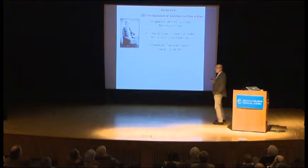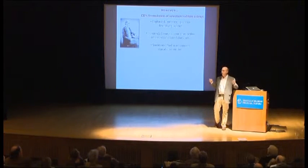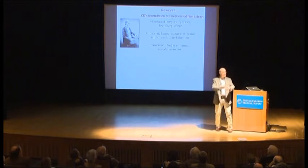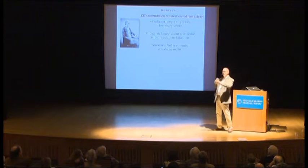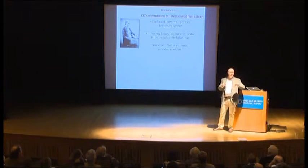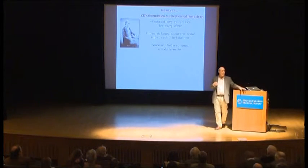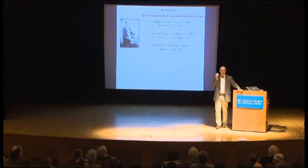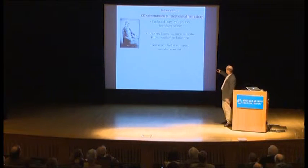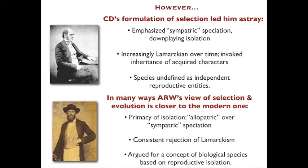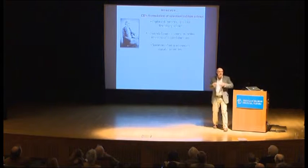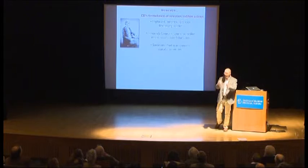For example, through his principle of divergence, Darwin emphasized what we biologists call sympatric speciation — speciation in place — and downplayed the importance of isolation or allopatric speciation. Long since, that has been — I wouldn't say refuted, sympatric speciation happens — but almost always it's thought that isolation must play a role in speciation. Darwin's reliance on sympatric speciation was by and large wrong. His principle of divergence is important for underscoring ecological principles like competitive exclusion and niche partitioning, but insofar as it led him to this model of speciation, it was incorrect.